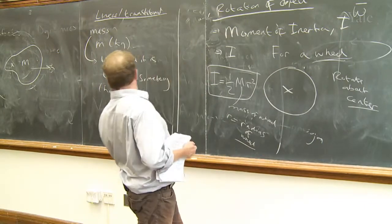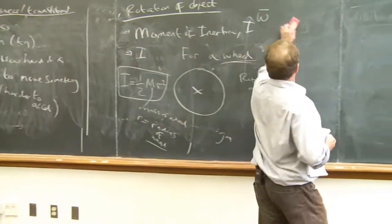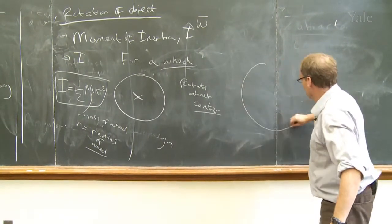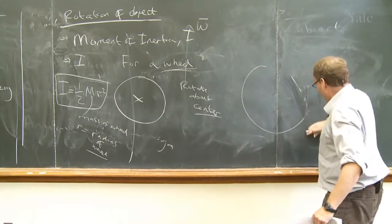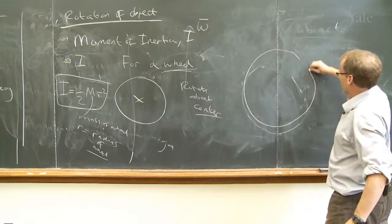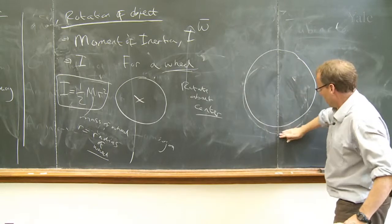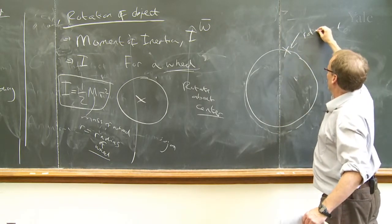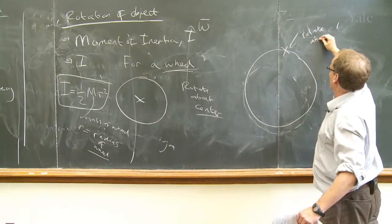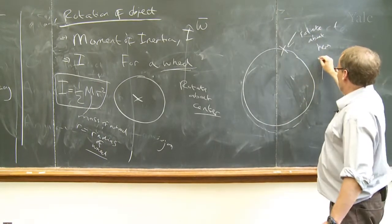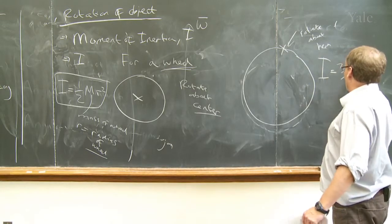Let's say we take the same wheel and we try to rotate that wheel about this point. Then the moment of inertia now is actually three upon two m r squared.